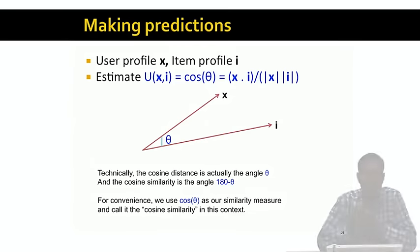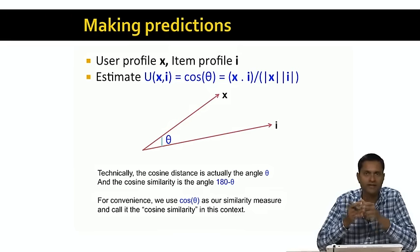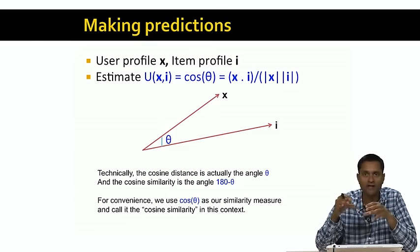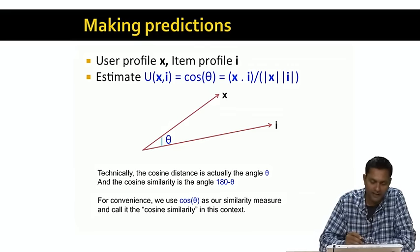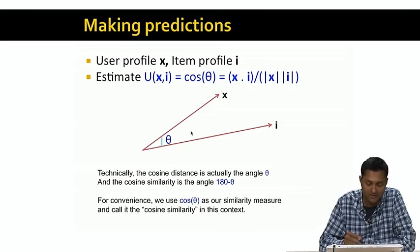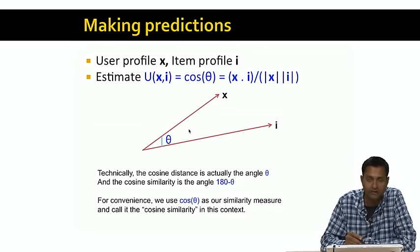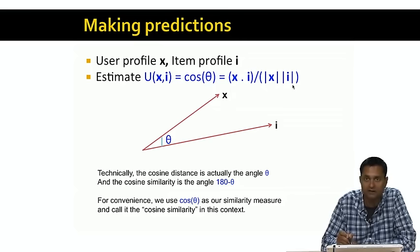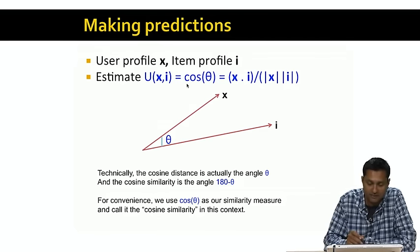Now that we have user profiles and item profiles, the next task is to recommend items to the user. The key step is to take a pair of user profile and item profile and figure out what the rating for that user-item pair is likely to be. Remember that both the user profile and the item profile are vectors in a high-dimensional space — here shown in two dimensions, but in reality embedded in a much higher dimensional space. A good distance metric between vectors is the angle theta between them, and you can estimate this using the cosine formula. The cosine similarity between user x and item i is the dot product of the two vectors divided by the product of their magnitudes.